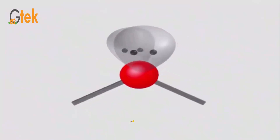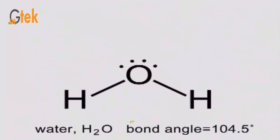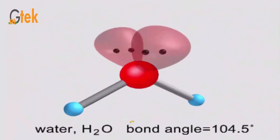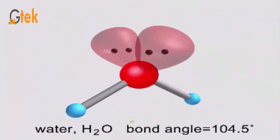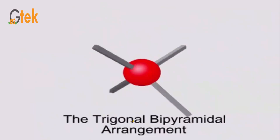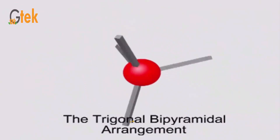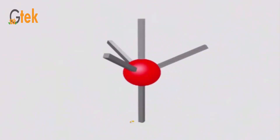With two lone pairs of valence electrons in the outer shell, the same effect occurs with four valence electrons. The bond angle becomes less than 109.5 degrees. The typical example is water, with a bond angle of 104.5 degrees.